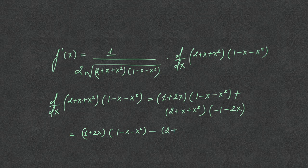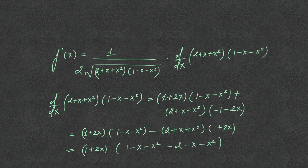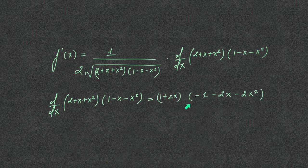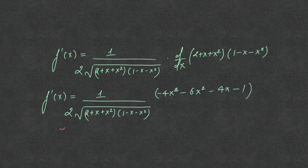Taking common terms, the minus comes out and the rest of the terms are the same. We can factor out (1 plus 2x), giving (1 plus 2x) into [(1 minus x minus x squared) minus (2 plus x plus x squared)], which simplifies to (1 plus 2x) into (minus 1 minus 2x minus 2x squared). Substituting this into f dash x for critical points.